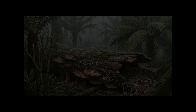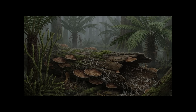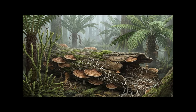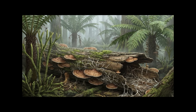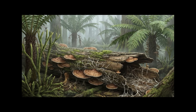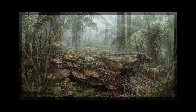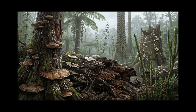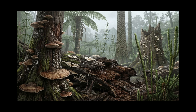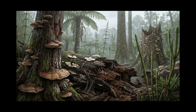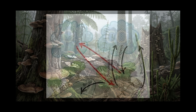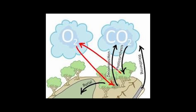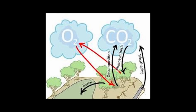And then, finally, fungi figured it out. After 60 million years, the decomposers evolved the ability to break down lignin, to actually digest wood. Dead plants started rotting like they were supposed to. Carbon got released, oxygen levels began to drop.